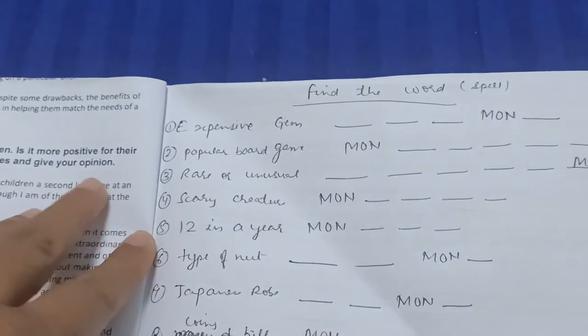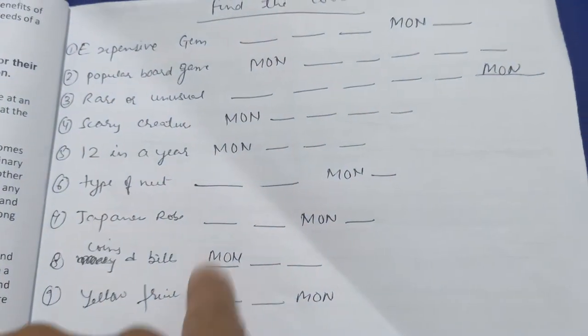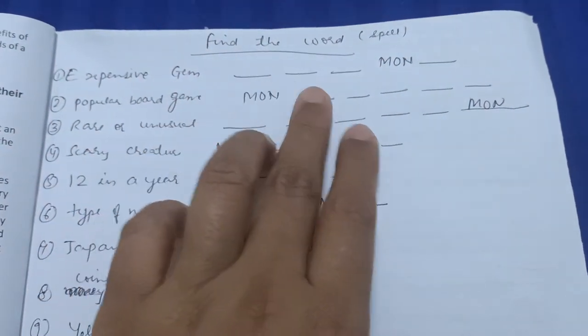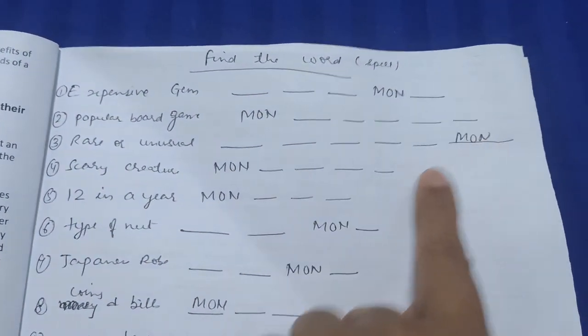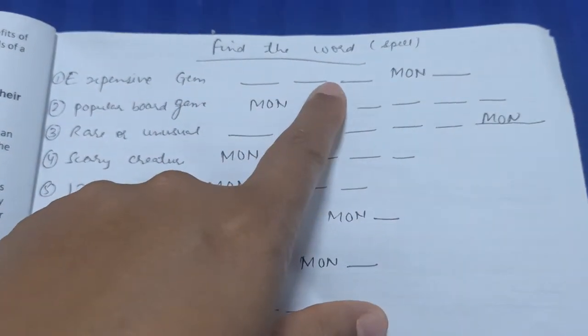You can say this is a spelling-based question but it has some critical thinking involved. You have to find the word as per the clues and spell them, and all these words have M-O-N in common. Expensive gem—diamond.